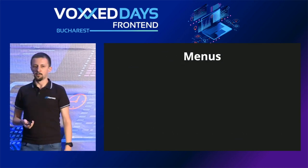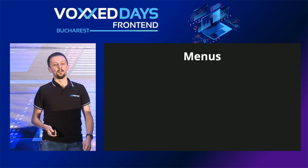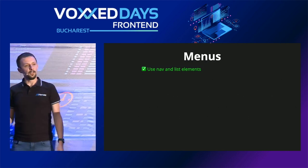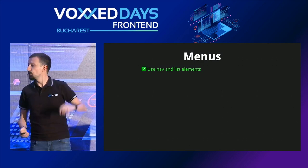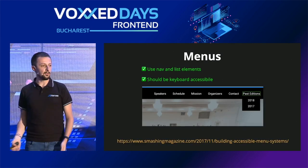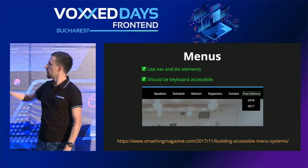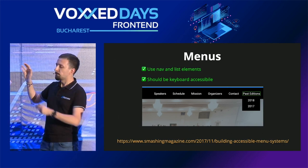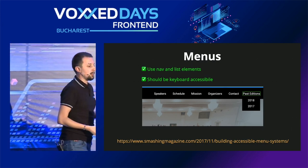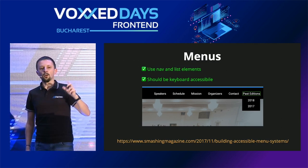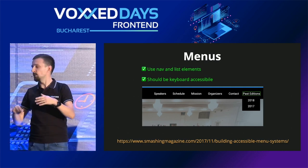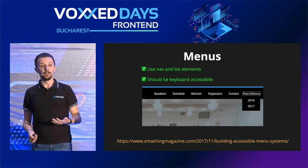Menus are also important elements. Screen reader users rely a lot on quick navigation — they don't wait for the reader to read out the entire page. Use a nav element, because it's quickly identified by any screen reader. Inside the nav, use unordered lists and list items, because those are fully accessible by default. For example, on the JS Heroes website we put everything in an unordered list. As a screen reader user lands on the nav, it says 'this is a list of six items' and you navigate with arrows: 'list item one of six, list item two of six' — very useful information.